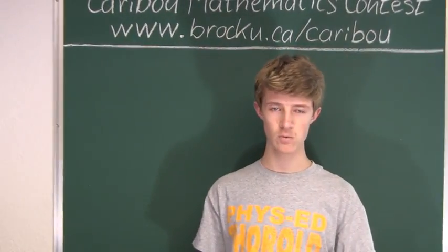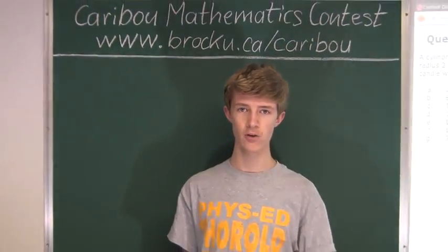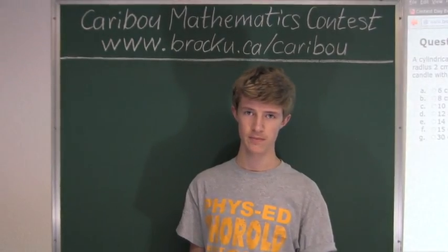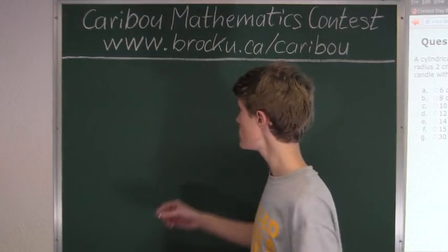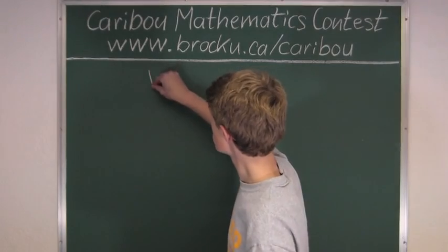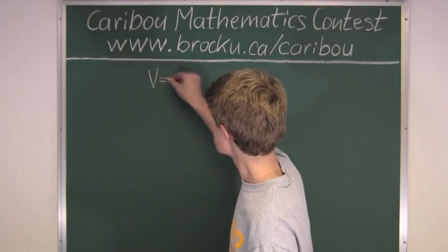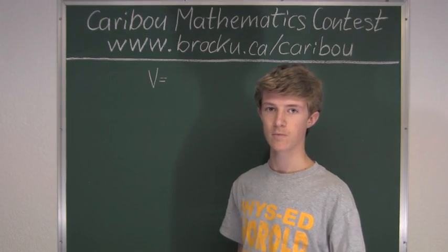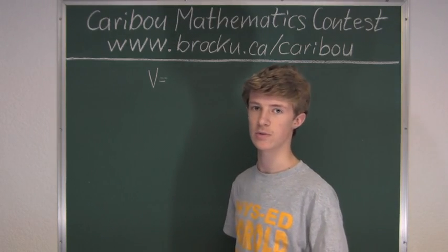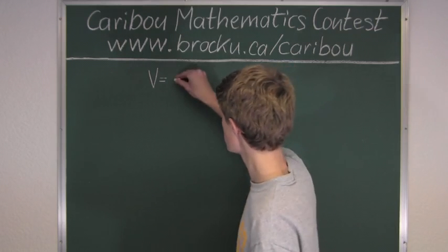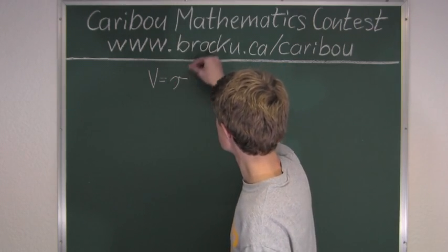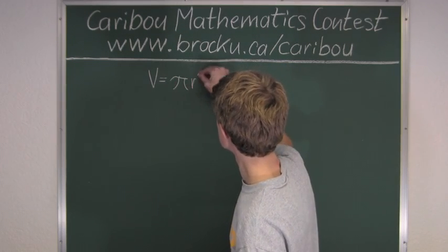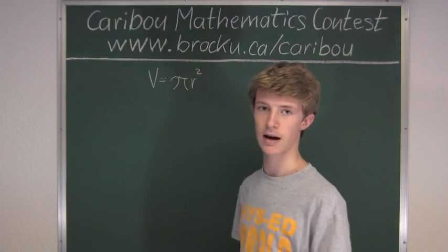For this question, we will need to know the formula for the volume of a cylinder. The volume equals the area of the base, which is the area of a circle, which we know is pi times radius squared times the height of the cylinder.